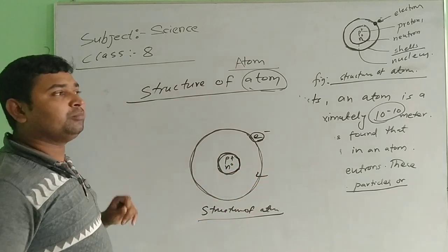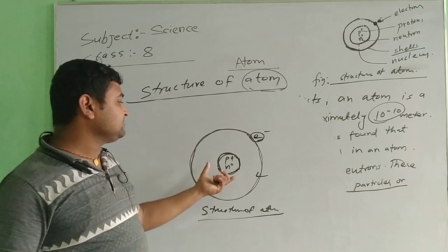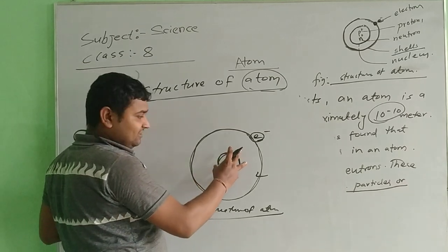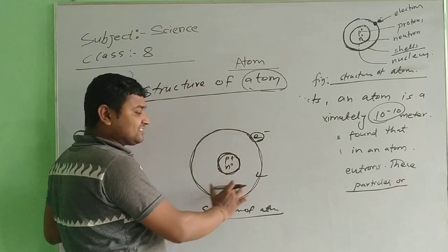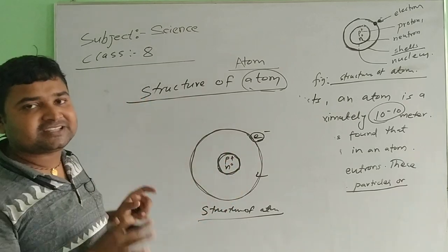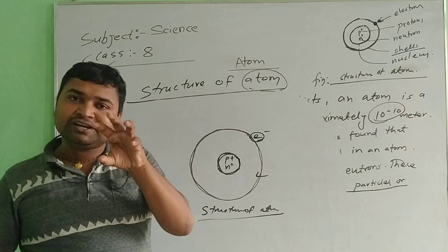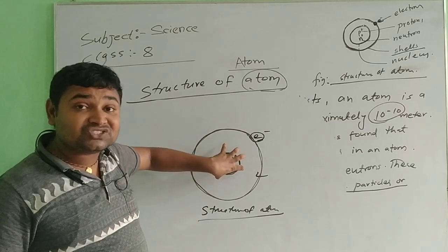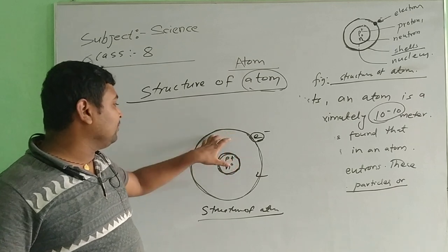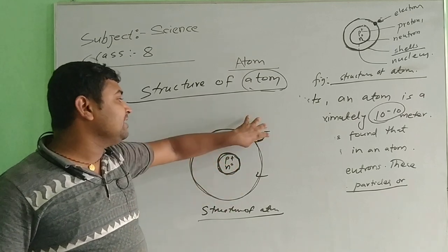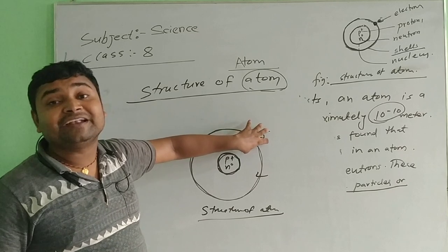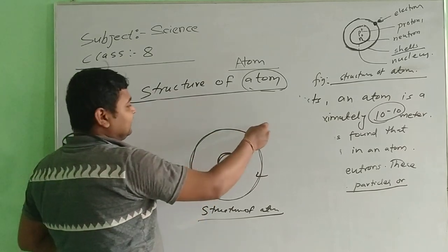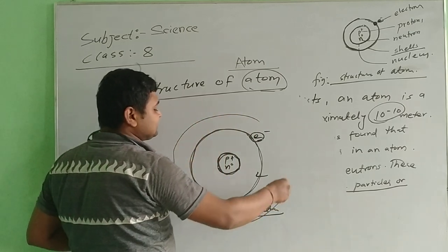According to the modern picture, inside the shell, this nucleus looks like the Sun — this is like the solar system. In the solar system, the central body is the Sun; in the same way, this nucleus is at the center like the Sun, and this is the orbit of the shell.